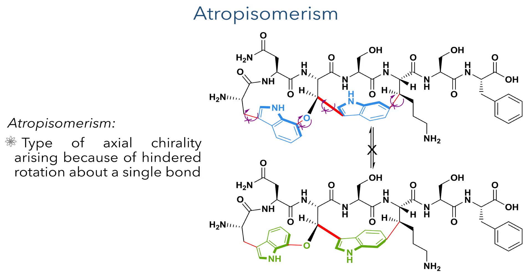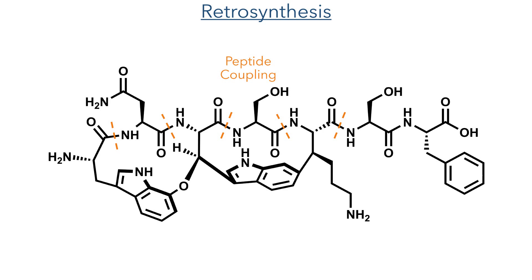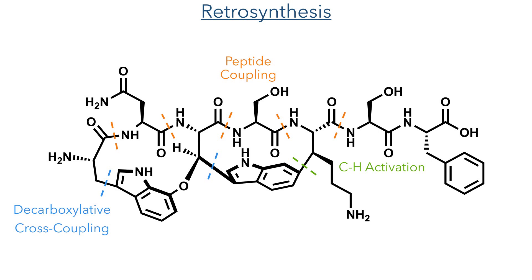The retrosynthetic strategy for this molecule involves using well-established peptide coupling methodology to construct the polypeptide backbone. Meanwhile, they could use C-H activation to install one of the necessary pendant groups. In order to set the stage for cyclisation, they would use decarboxylative cross coupling to install alkyne groups, and these would then be reacted with alpha-haloanilines to perform atroposelective LARAC cyclisations which would complete the macrocycles.